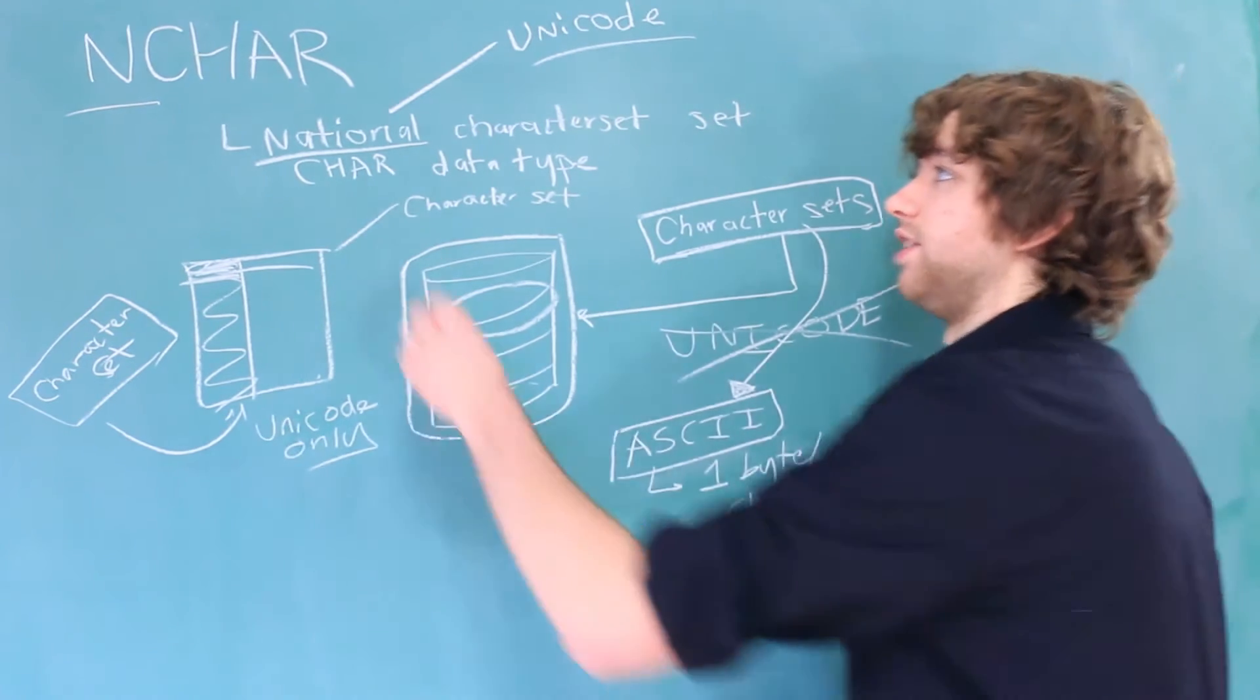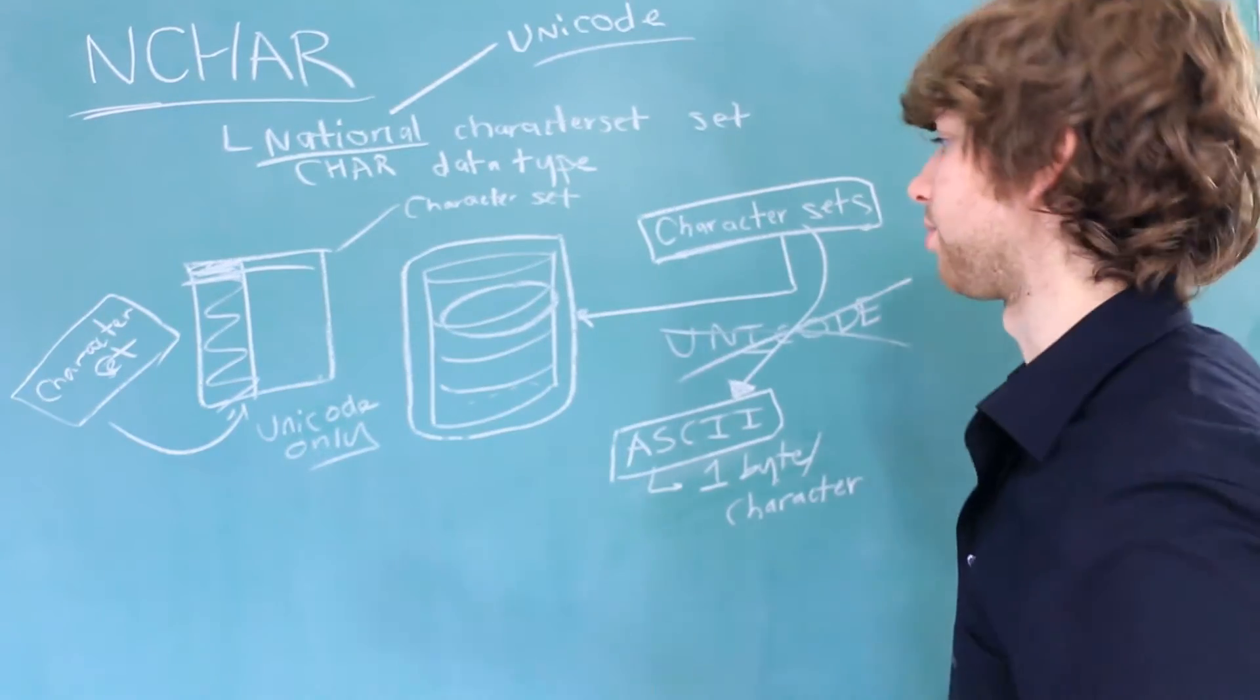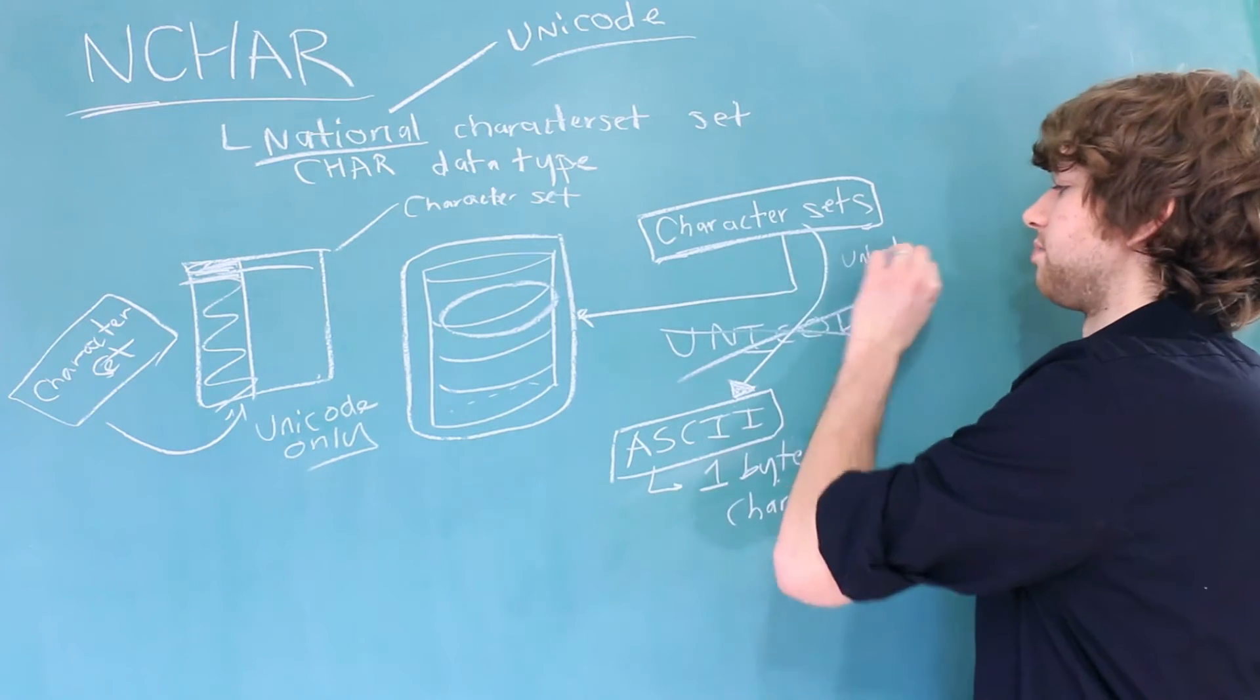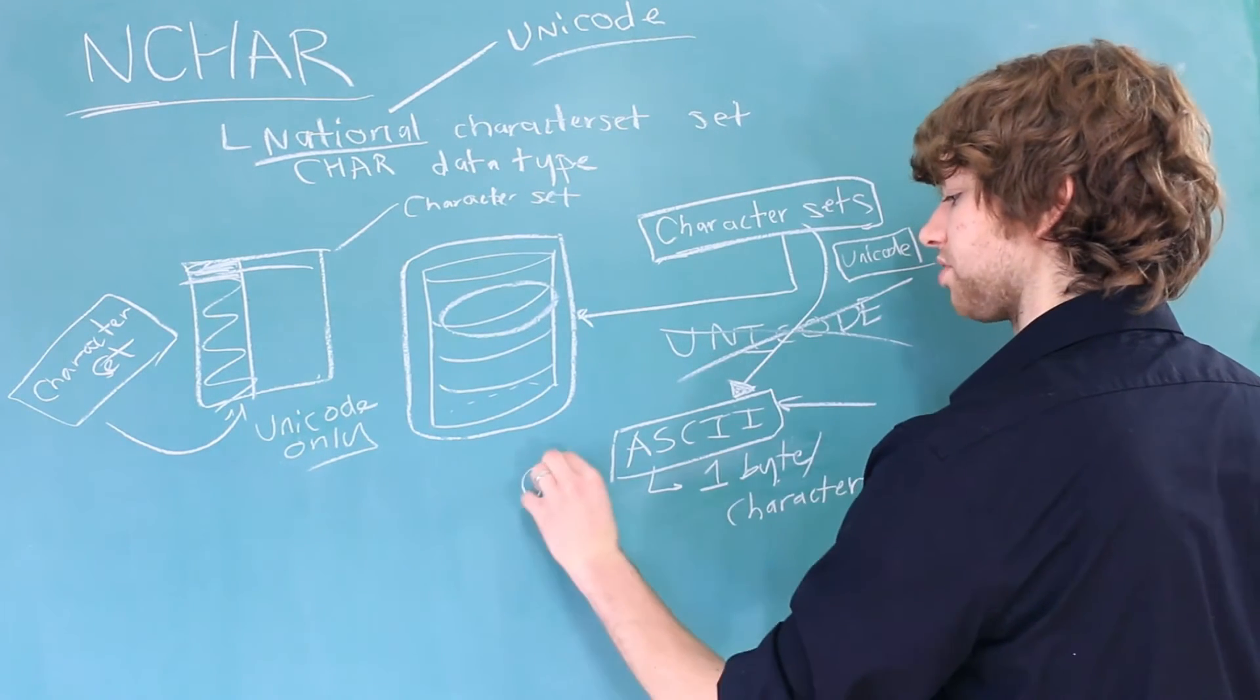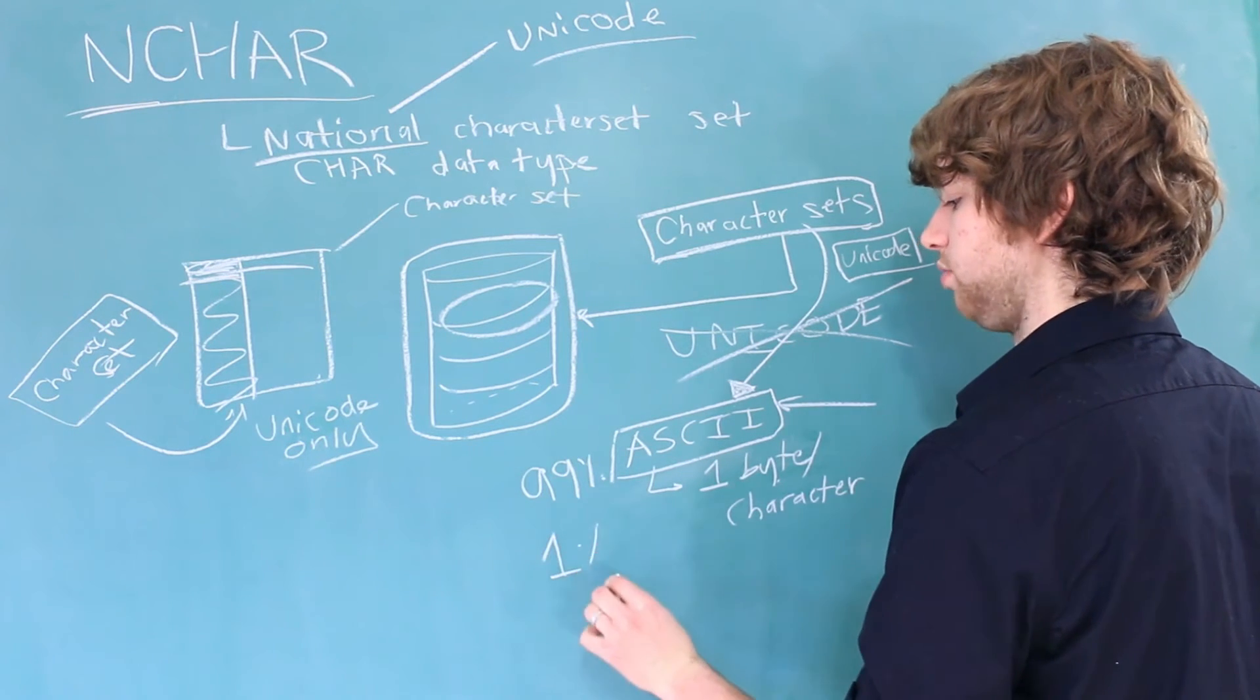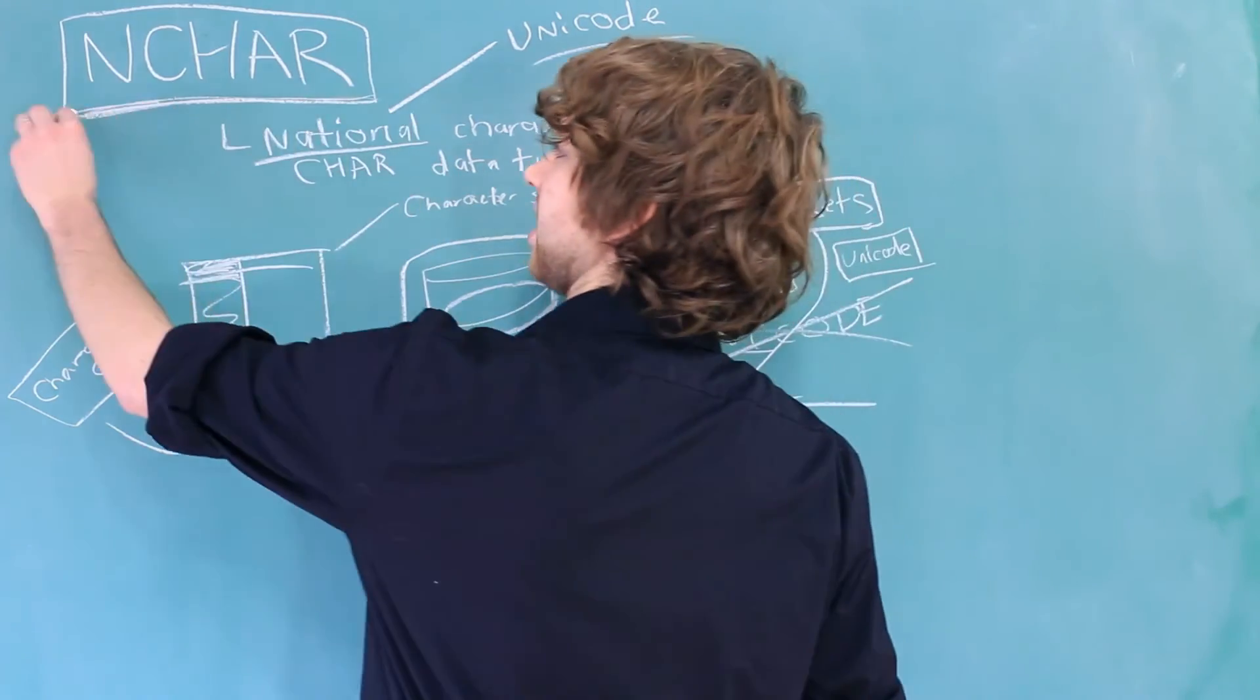If we don't have this data type available to us, we're not able to do that in Oracle without changing the database character set to something like Unicode. Unicode has many more characters available to us and allows for different languages, whereas ASCII limits us to just English. So if 99% of our database is ASCII, we might have 1% that we want to be Unicode. So in order to get this 1%, we can label the column as NCHAR.